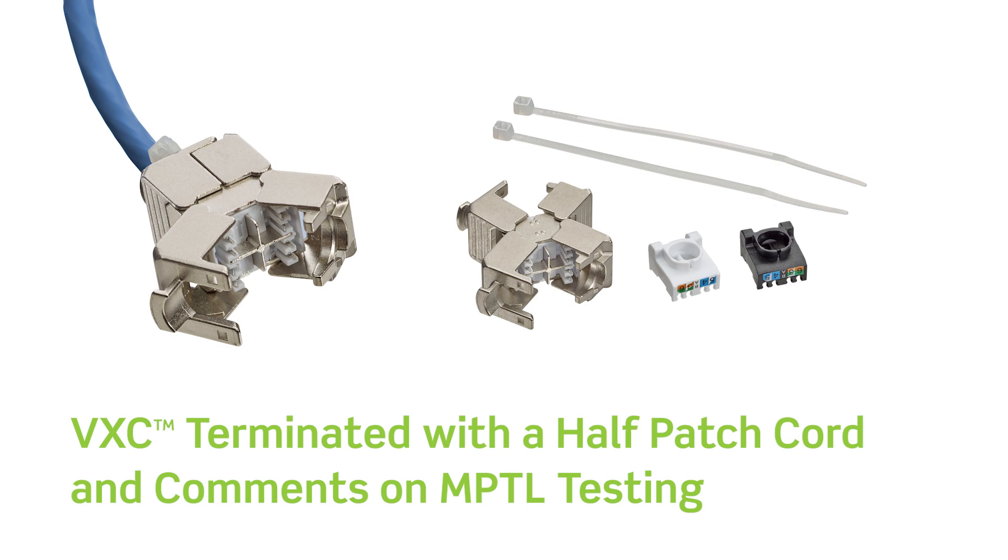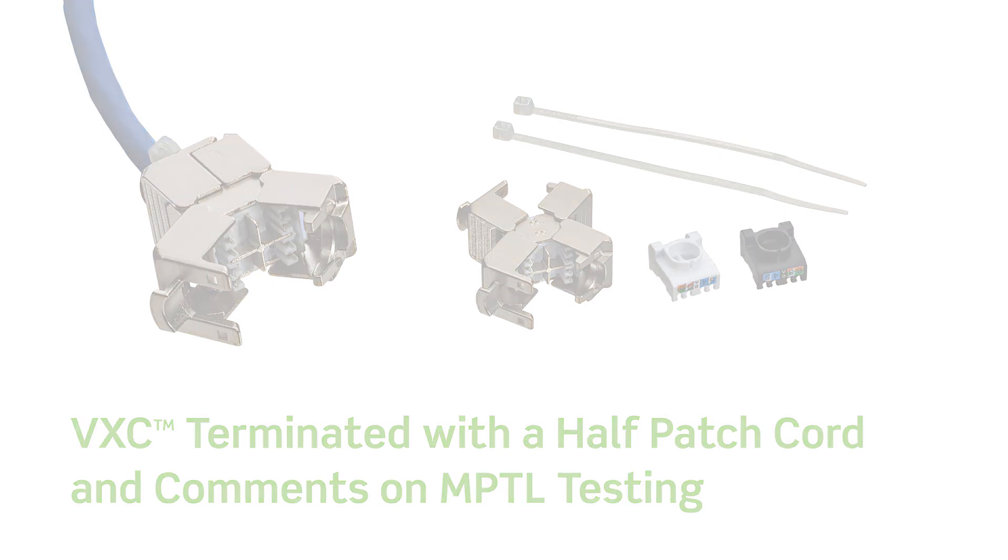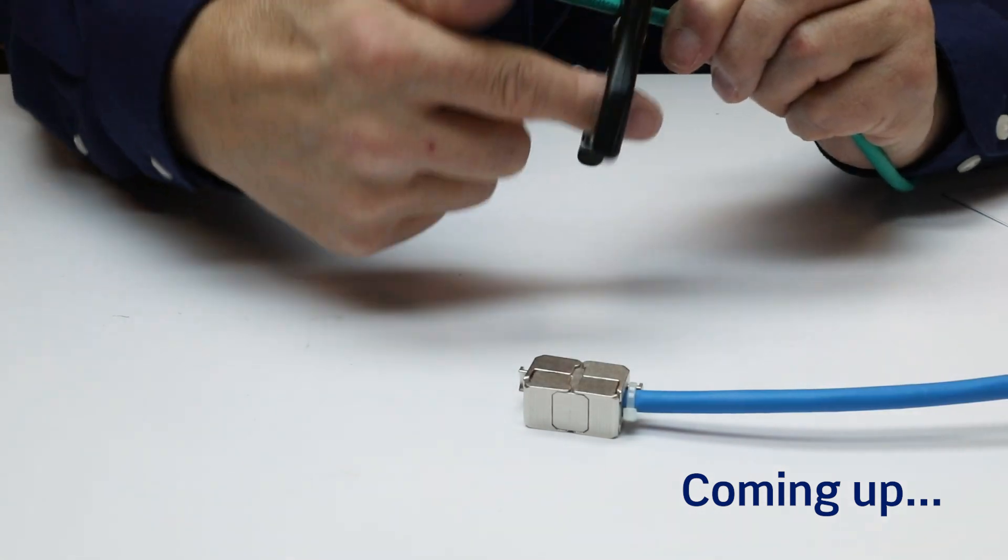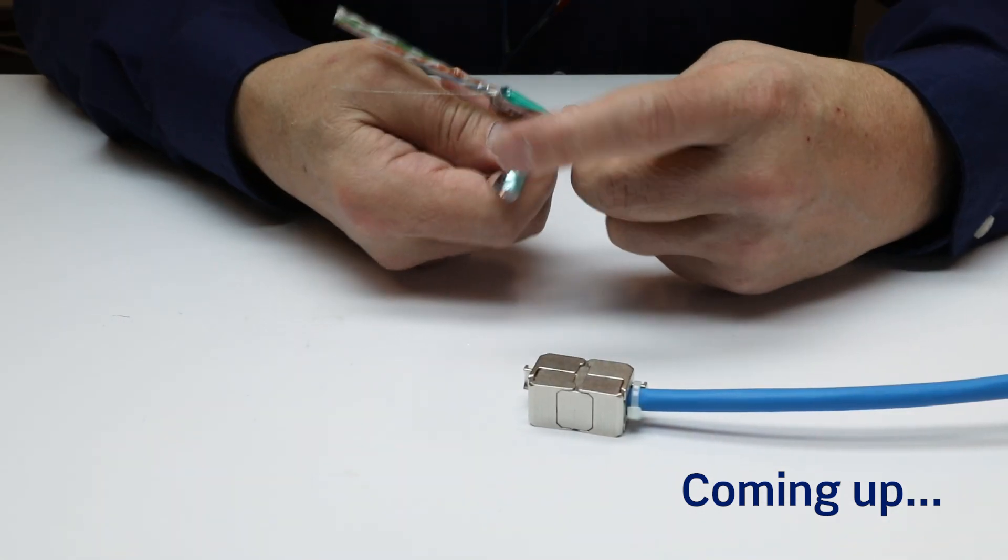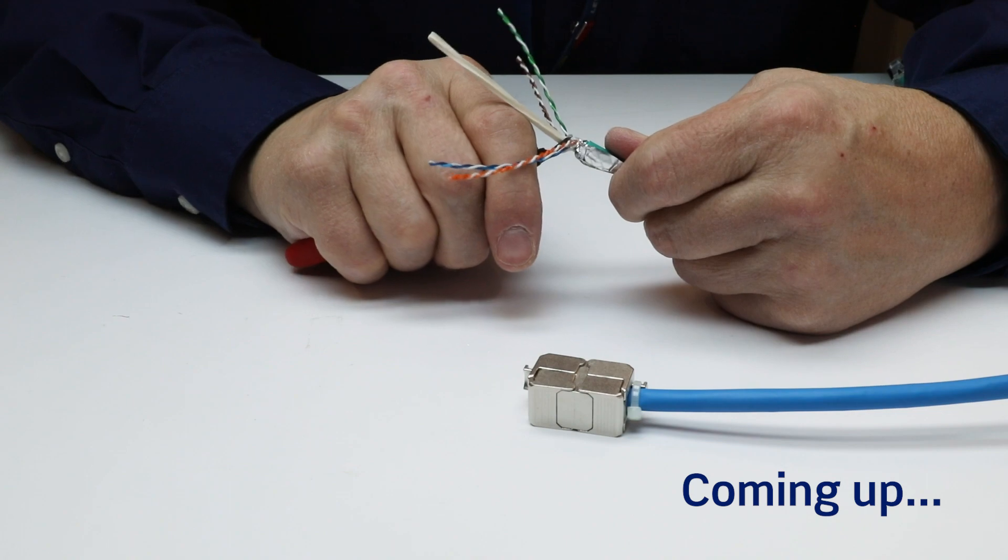and other ceiling mounted devices where it is desirable to terminate a horizontal cable with a plug. In this video, we will demonstrate the use of the VXC Coupler and one half of a patch cord to create a modular plug termination.